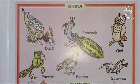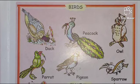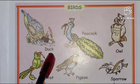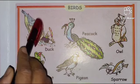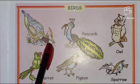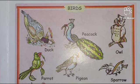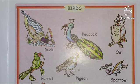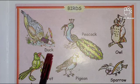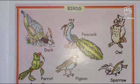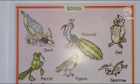So our first bird is duck. Say with me — duck. कौन सा bird है ये? It's duck. Duck को हिंदी में क्या बोलते हैं? बत्तख। Which bird is this? This is duck. Say once more — duck. D-U-C-K. Duck. Very good. Duck को हिंदी में बोलते हैं बत्तख।